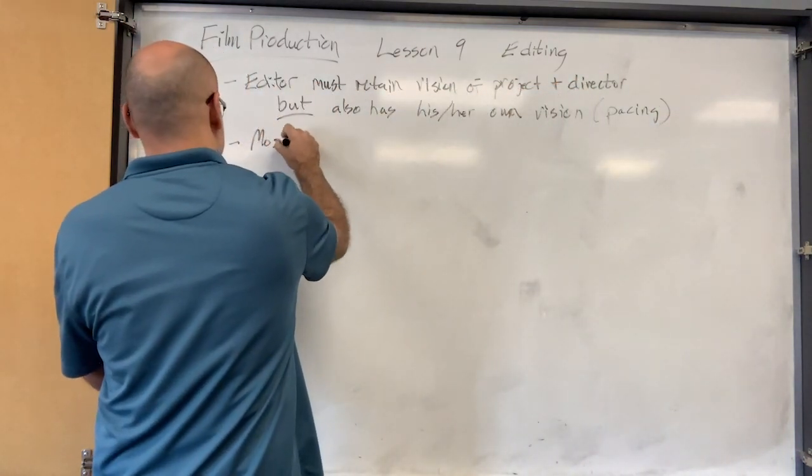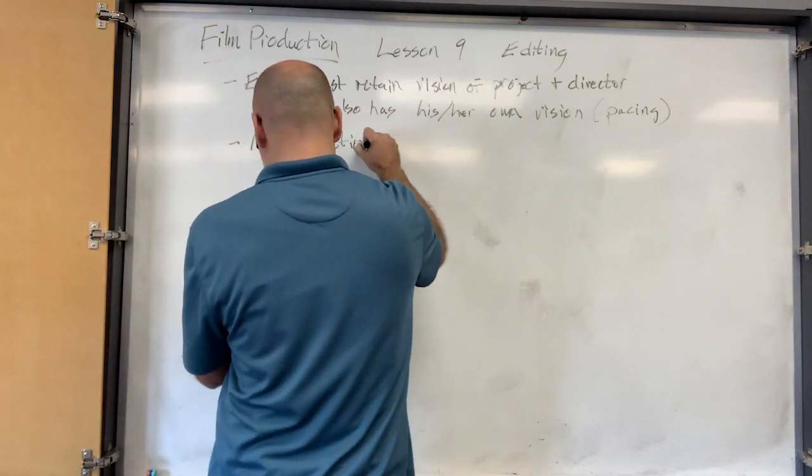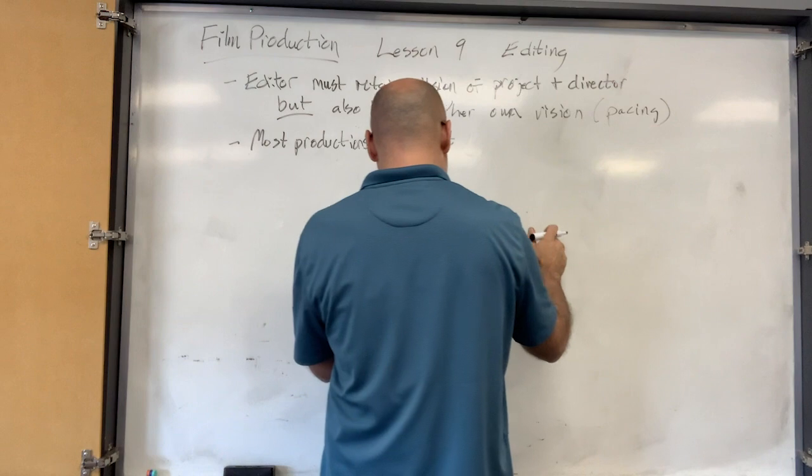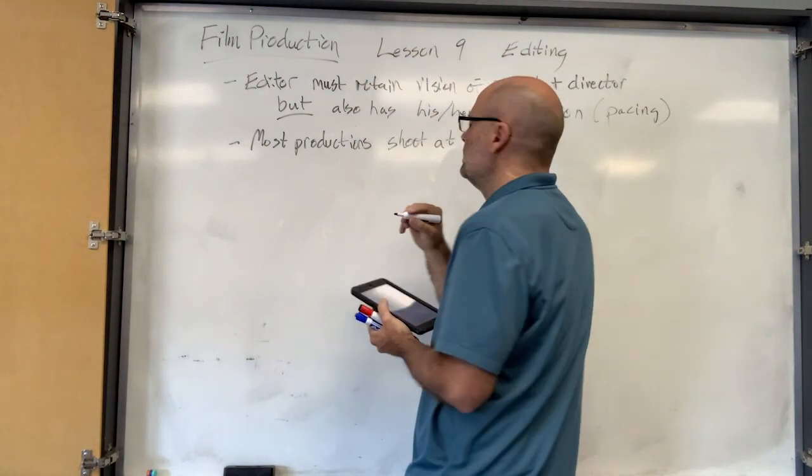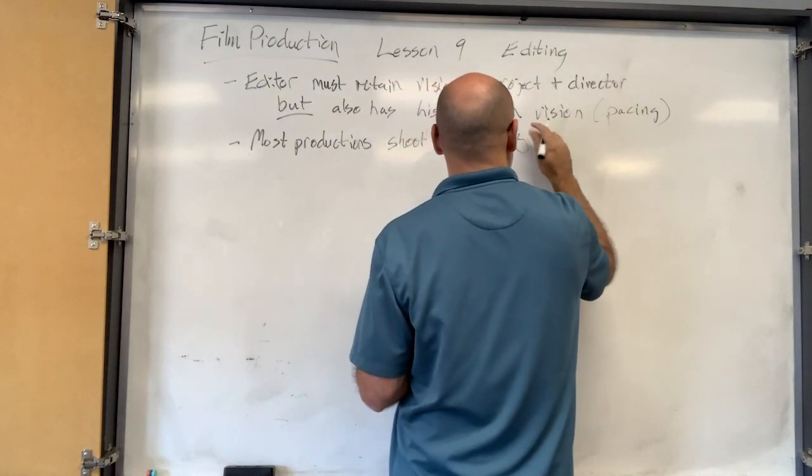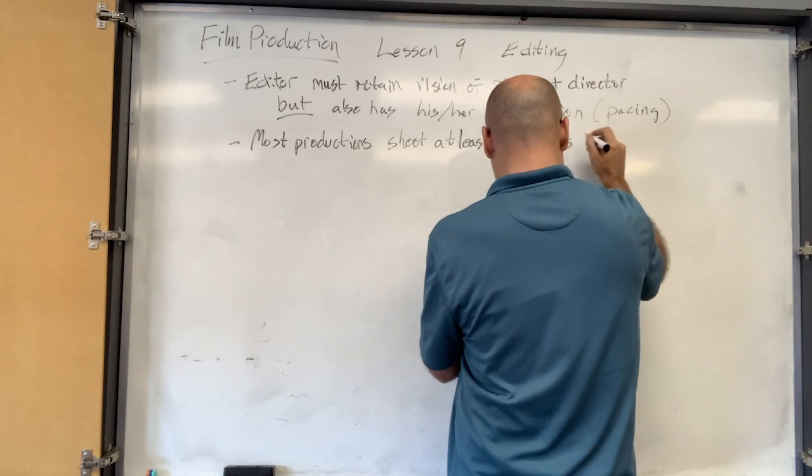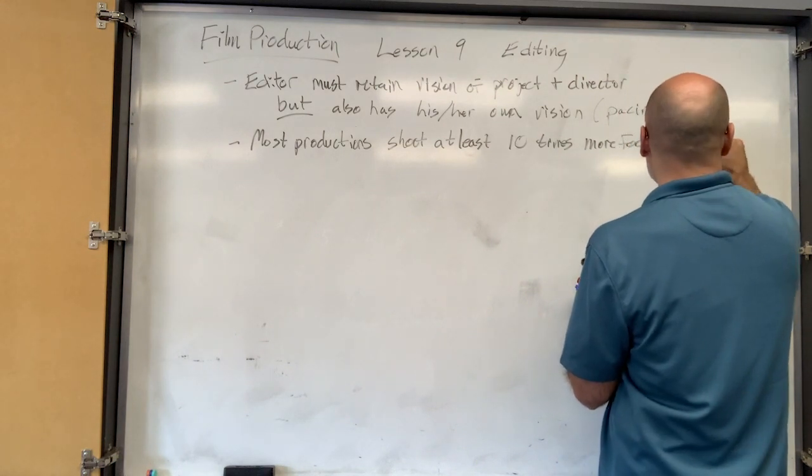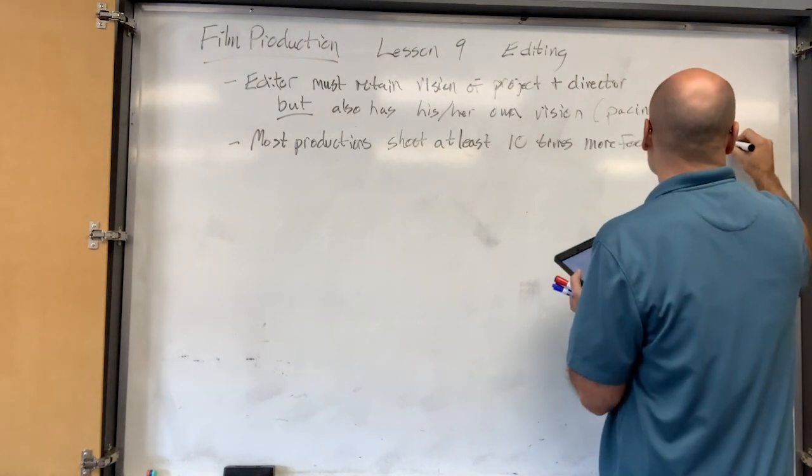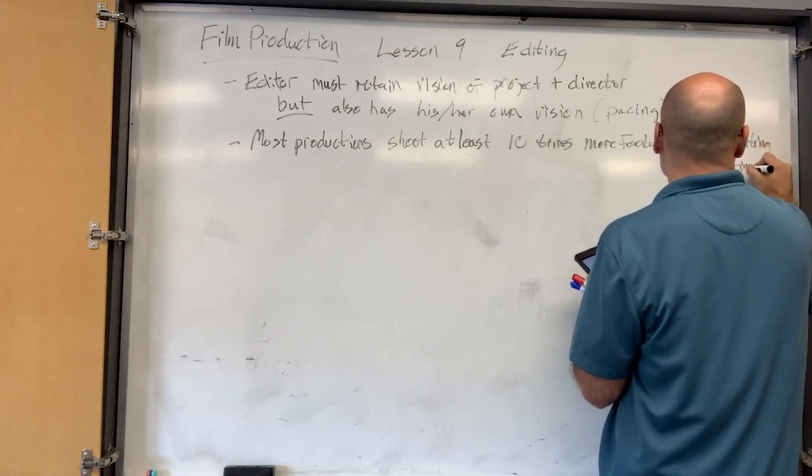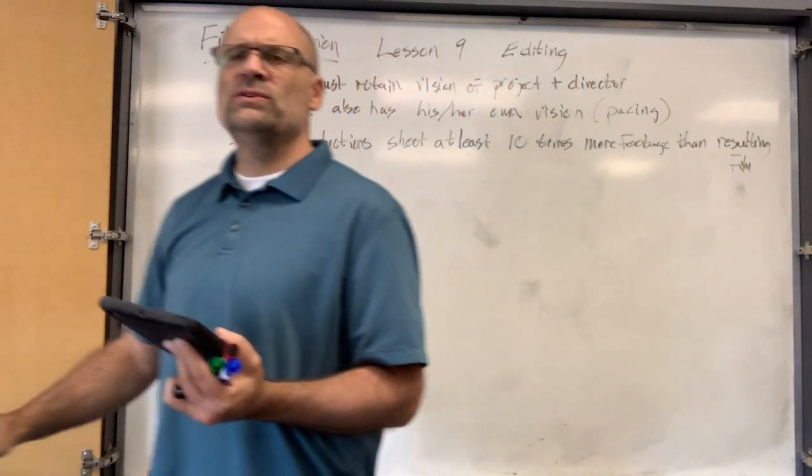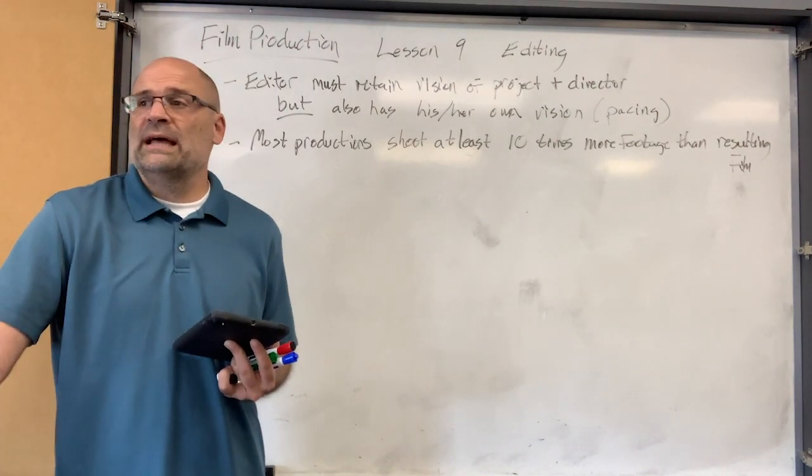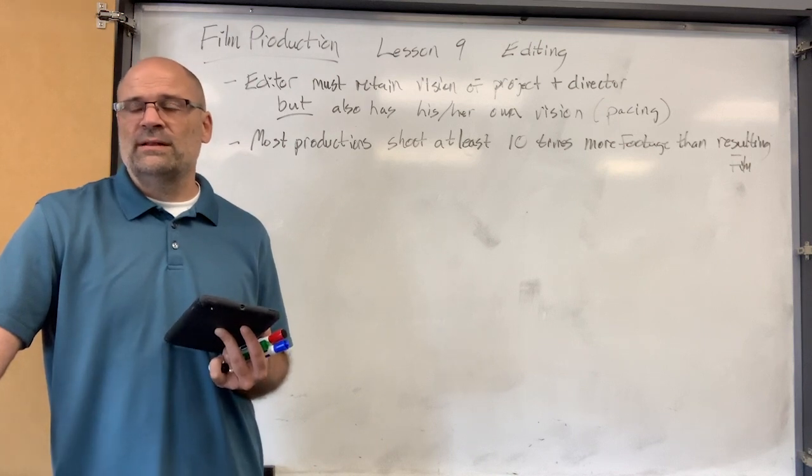Now most productions shoot at least 10 times more footage than the resulting film. So if a film was two hours, they shoot at least 20 hours of footage. So the editor has to go through that 20 hours of footage to edit the film.